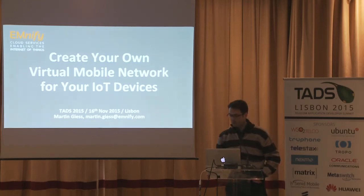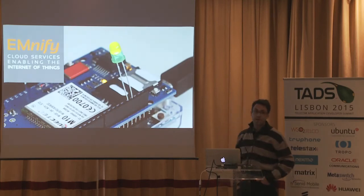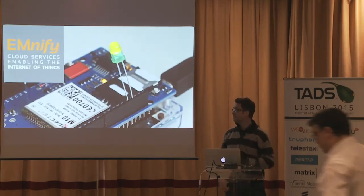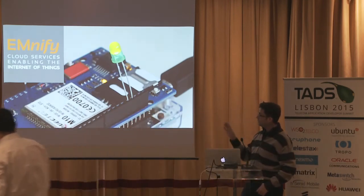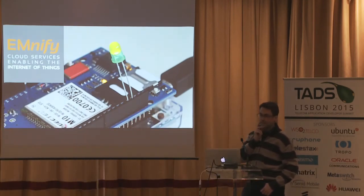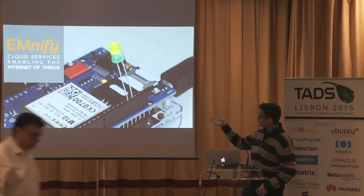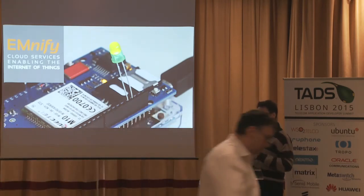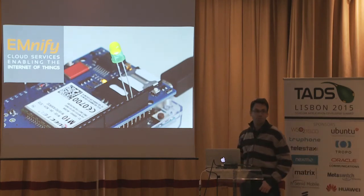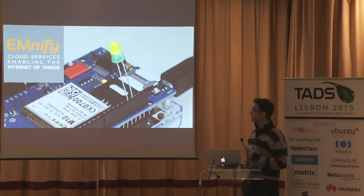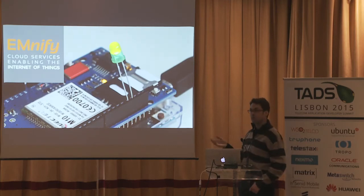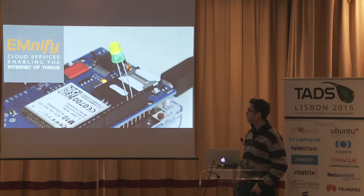At Ennify we develop and operate cloud services enabling the Internet of Things, and one of our focus areas is mobile connectivity. That is when you have your Arduino or your Raspberry Pi or any of these kinds of devices and you want to fit it with mobile connectivity — how can you do that in a flexible, secure, and globally scalable way? Mobile connectivity is certainly not the only way IoT is connected, but it's still a very important part of it.